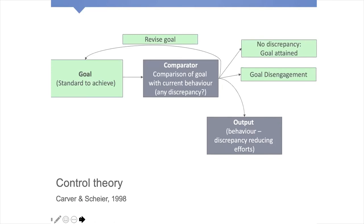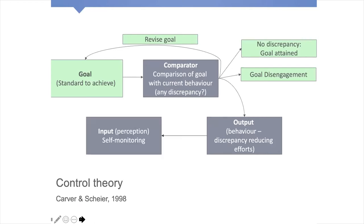What we hope is that people think about this and decide they need to do something differently — they need to change their behavior to reduce the discrepancy between their goals and what they're actually achieving. Once we try and make a change, we can then monitor how we're doing and see how we're doing against our comparators. That's how we think audit and feedback works — it's a pretty fundamental aspect of human behavior.